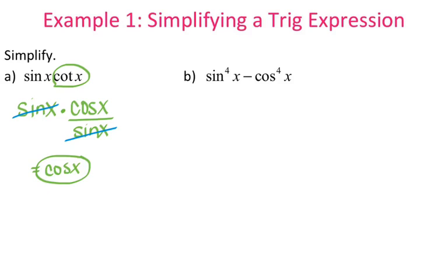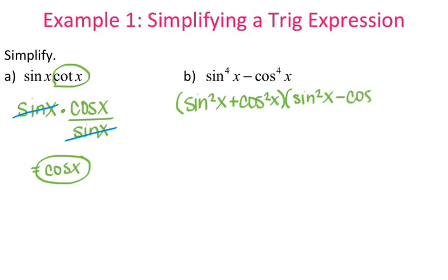For letter B, you can go ahead and factor. This is a difference of squares, since sine to the fourth is a perfect square. So we can write this as sine squared x plus cosine squared x, times sine squared x minus cosine squared x. It's similar to factoring x squared minus 25, which factors to x plus 5 times x minus 5.